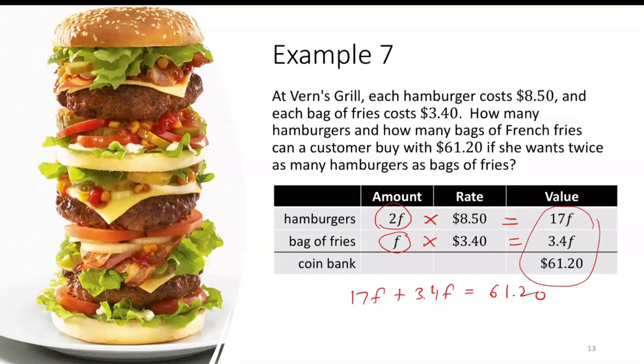So 17 plus 3.4F is 20.4F, and then divide both sides by 20.4. 61.2 divided by 20.4 is 3. So now let's make sure we understand we answered the question. We want to answer how many hamburgers and how many bags of fries. So we know fries was F, and we just found F to be 3. So that tells me there were 3 bags of fries and 6 hamburgers.